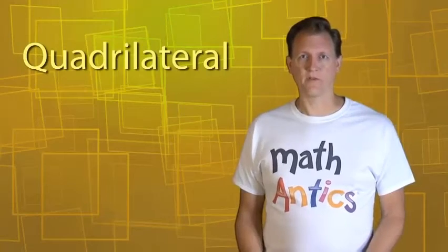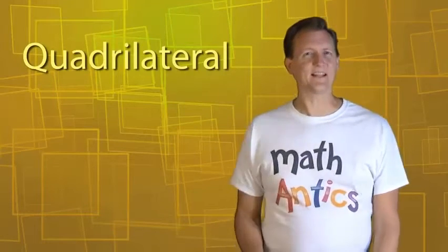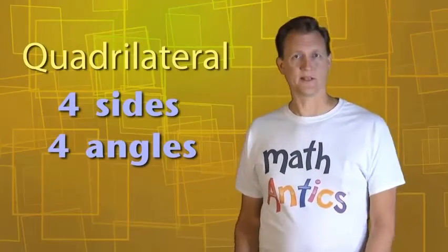Quadrilateral is just a fancy math word for a polygon that has exactly four sides and four angles, like this one. You should recognize this shape, of course, it's a square.